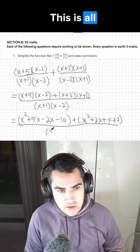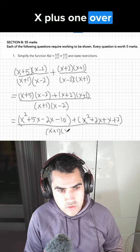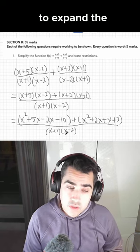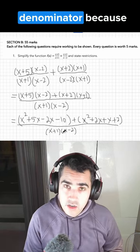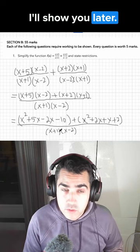Just like that. This is all, again, under x plus 1 over x minus 2. We're not going to expand the denominator because we don't have to, and I'll show you later why.